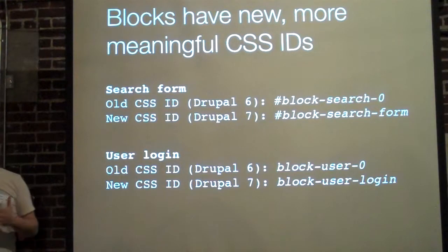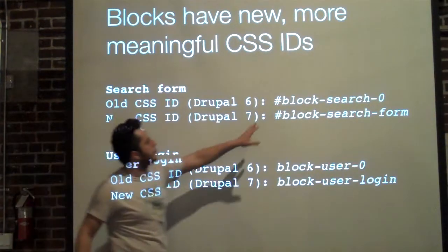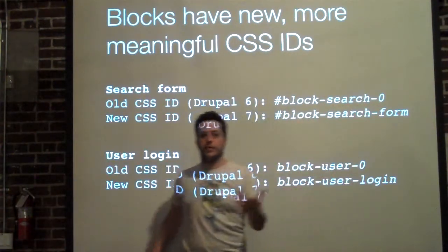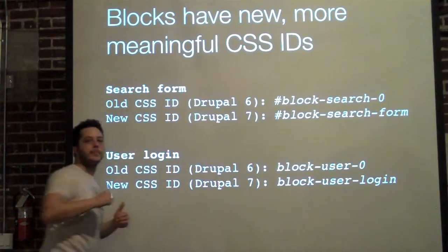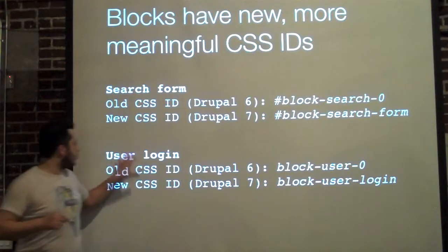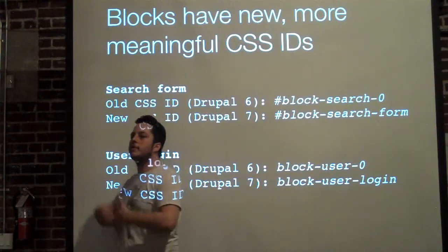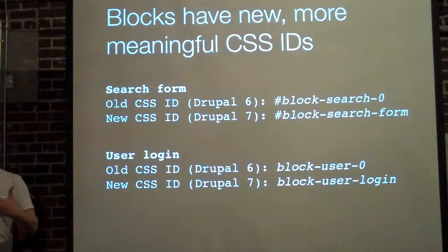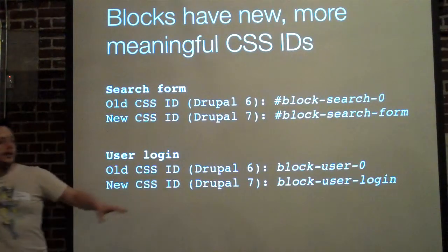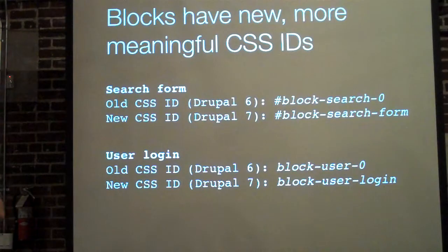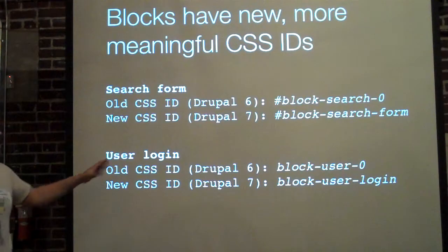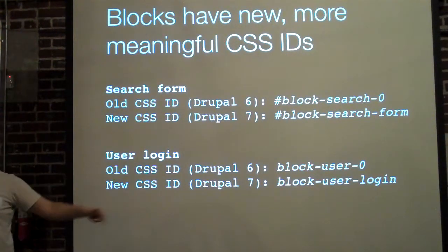The blocks within Drupal now have much more meaningful IDs. In Drupal 6 we had blocks like block-search-0, which didn't mean much. Now it would be block-search-form. For the user login block, instead of block-user-0, it's now block-user-login. Tons of these changes have happened — every block provided in core has gone through this change. There's a link at the end with the long list of changes from Drupal 6 themes to 7, including the full list of all the modules and what their IDs have changed to.